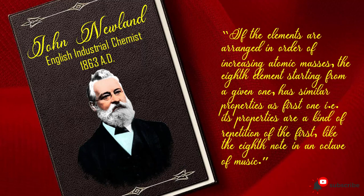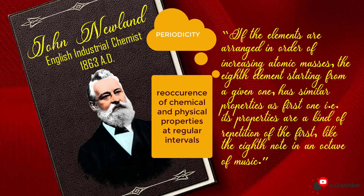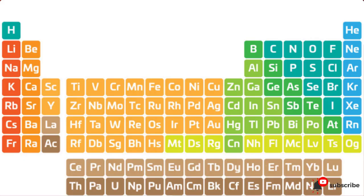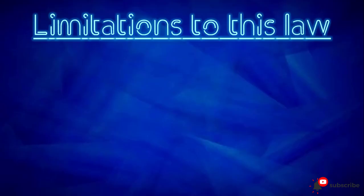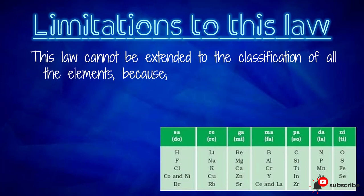This arrangement of elements for the first time brought to light the existence of periodicity — that is, the reoccurrence of chemical and physical properties at regular intervals — and provided a great idea towards the development of the modern periodic table.